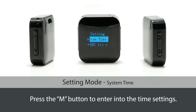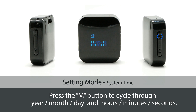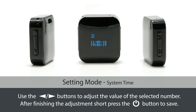System Time. Press the M button to enter into the time settings. Press the M button to cycle through year, month, day, hours, minutes, and seconds. Use the arrow buttons to adjust the value of the selected number.